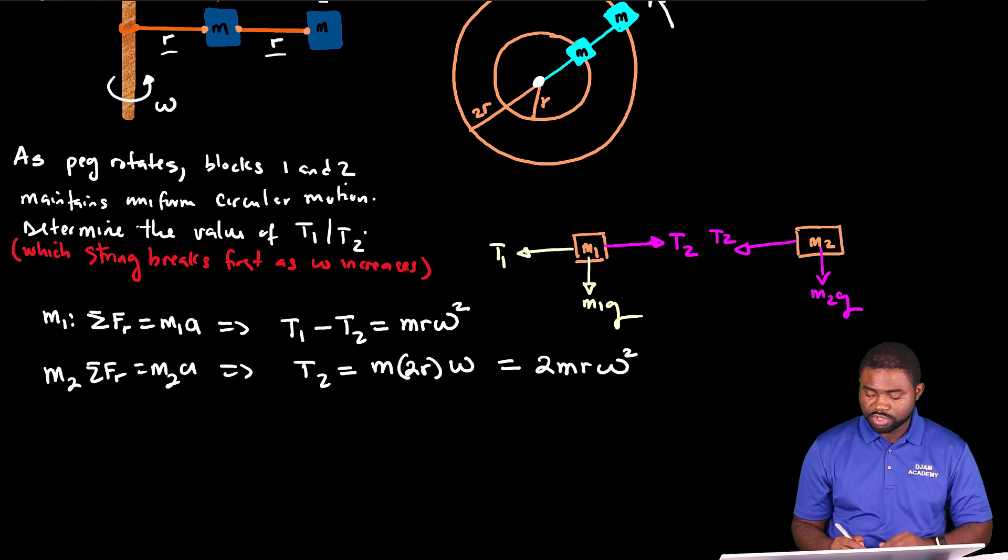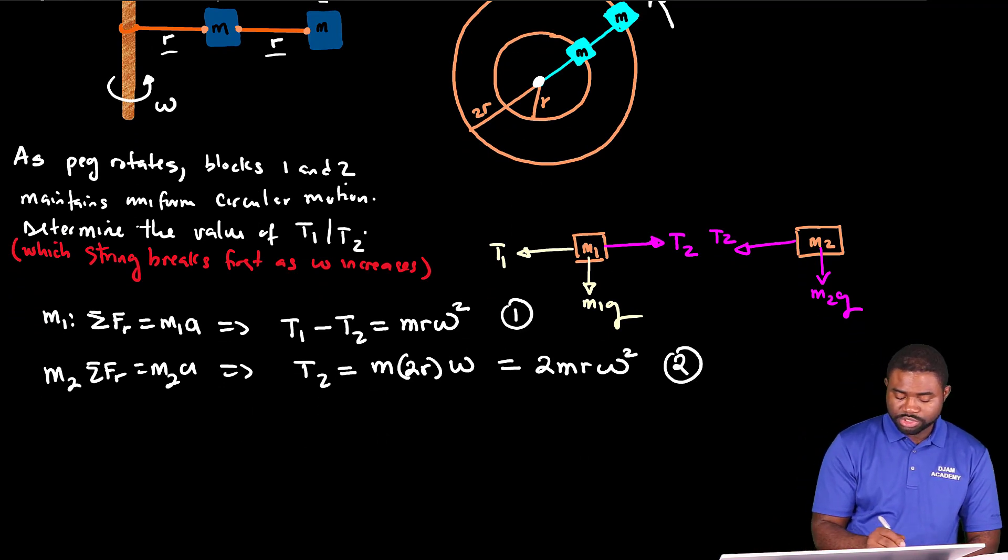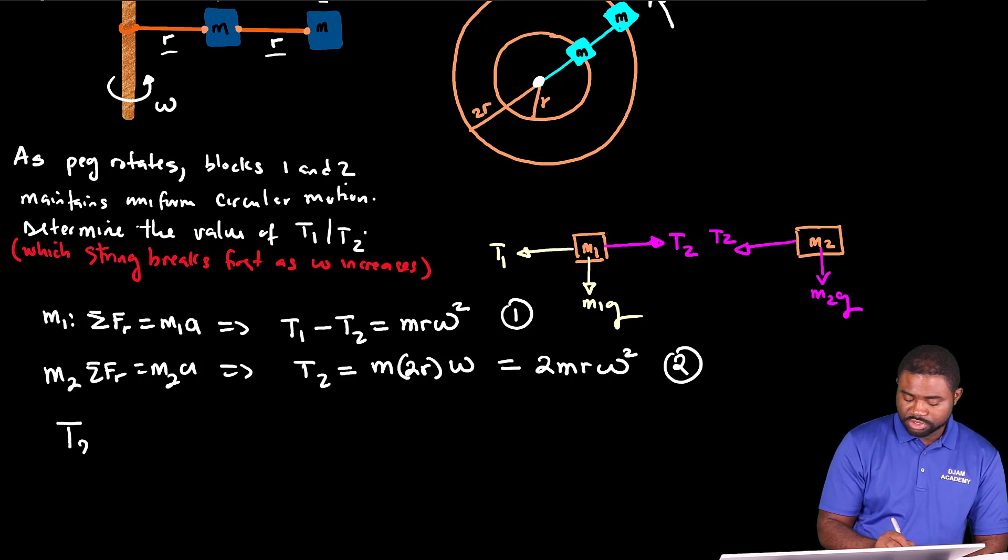So this is going to be equal to 2MR omega squared squared. Do not forget the square. You will lose points if you forget the square. So this is equation one and this is equation two. From equation two, you can see that T2 is equal to 2MR omega squared.